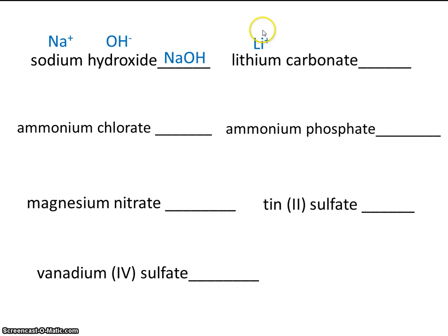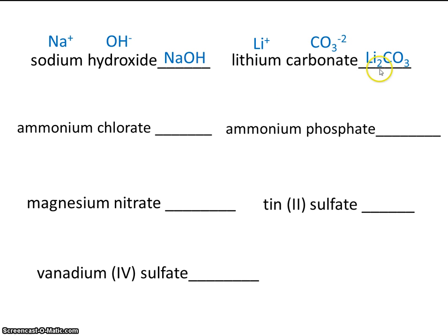Lithium always has a charge of plus 1. Carbonate is a polyatomic ion on the back of your periodic table and has a charge of minus 2. Since carbonate has a charge of minus 2, we'll use the zigzag method and need 2 lithiums. So the formula has 2 lithiums and 1 carbonate. Students sometimes mistakenly say we have 3 carbonates, but carbonate is CO₃ and we only have 1 CO₃.